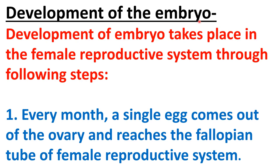Development of the embryo takes place in the female reproductive system through the following steps. First step: every month a single egg comes out of the ovary and reaches the fallopian tube of the female reproductive system. The right ovary and left ovary alternate each month. The fallopian tube is also known as oviducts.